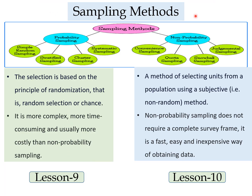Let's see the overview of sampling methods. Sampling methods are subdivided into probability sampling and non-probability sampling. In probability sampling, the selection is based on the principle of randomization — random or chance selection. It is more complex, more time-consuming, and usually more costly. Non-probability sampling selects units using a subjective or non-random method, does not require a complete survey frame, and is a fast, easy, and inexpensive way of collecting data.